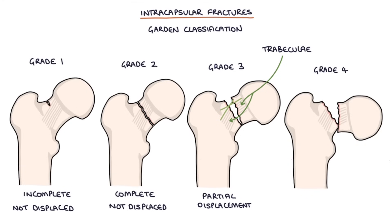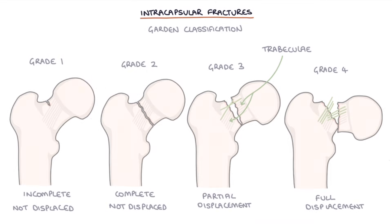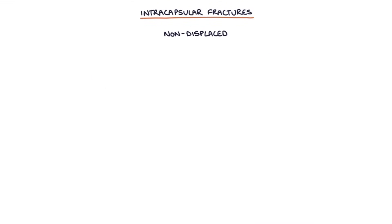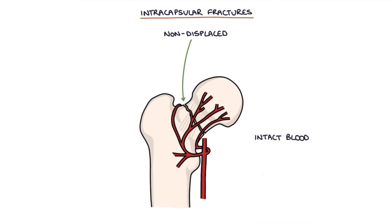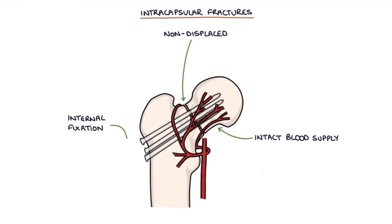Grade 4 has full displacement and the trabeculae are parallel. Non-displaced intracapsular fractures may have an intact blood supply to the femoral head, meaning it may be possible to preserve the femoral head without avascular necrosis occurring. These can be treated with internal fixation, for example with screws, to hold the femoral head in place while it heals.